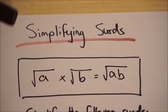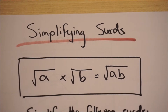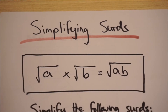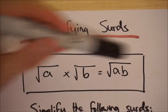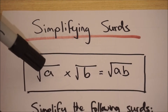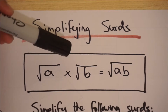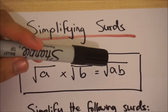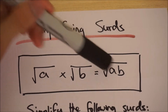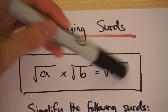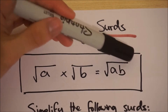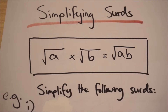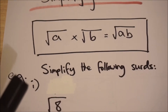When we look at simplifying surds, we can do that in multiple different ways. One of the more common ways is using this rule: the square root of a multiplied by the square root of b equals the square root of ab. Notice that a and b are under the same square root sign. Let's look at a few examples.